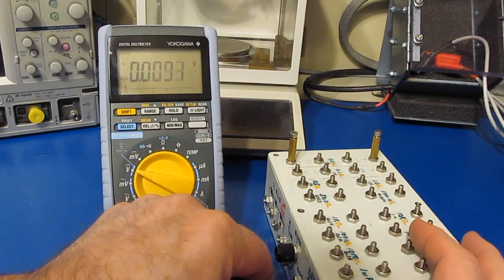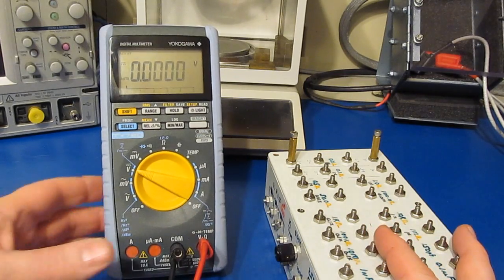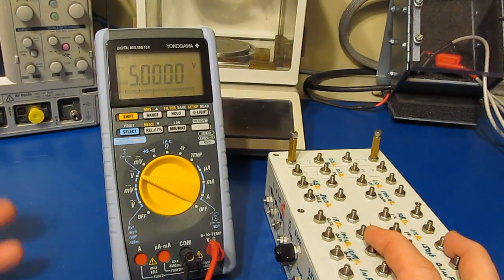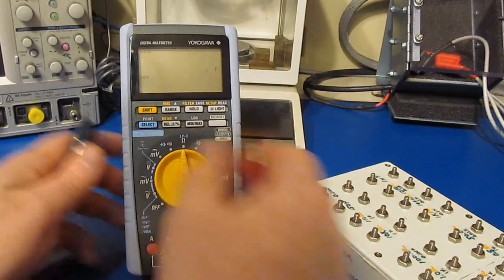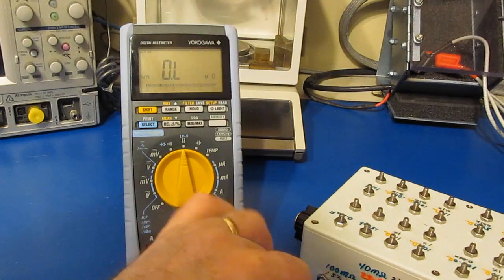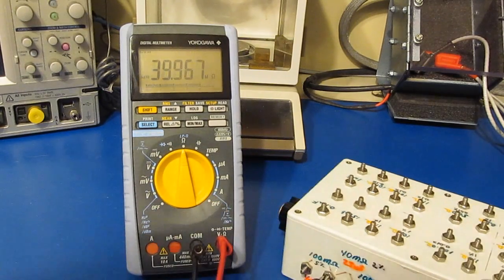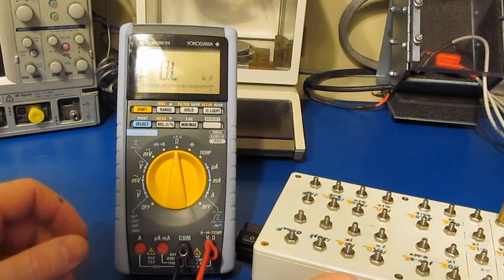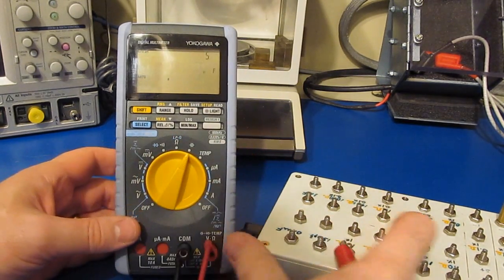So again everything worked on the meter except the capacitance mode. Let's just show you what it does with the 5 volt signal so you can see it's still dead on. Let's go ahead and we'll attach our 40 mega ohm resistor. 39.9, and let's just switch it to capacitance mode.